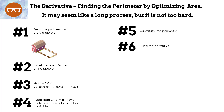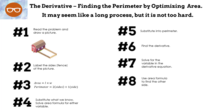Number six: find the derivative. Number seven: solve for the variable in the derivative equation. And finally, number eight: use the area formula to find the other side. So let's see how that process works.